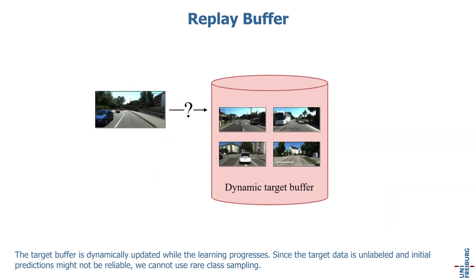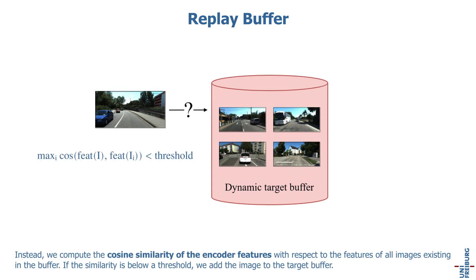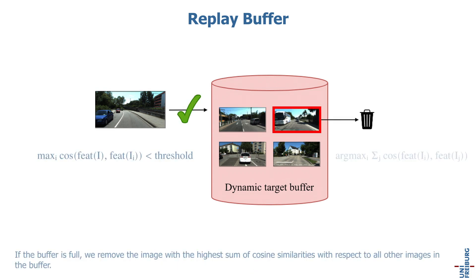The target buffer is dynamically updated while learning progresses. Since the target data is unlabeled and initial predictions might not be reliable, we cannot use rare class sampling. Instead, we compute the cosine similarity of the encoder features with respect to the features of all images existing in the buffer. If the similarity is below a threshold, we add the image to the target buffer. If the buffer is full, we remove the image with the highest sum of cosine similarities with respect to all other images in the buffer.